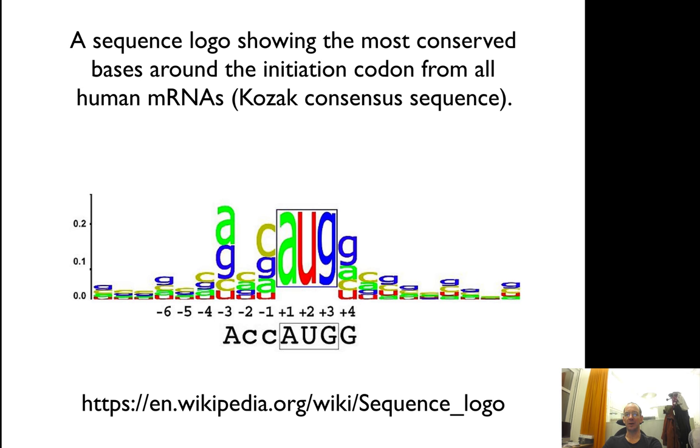Another example is the initiation codon, AUG, in human mRNAs. AUG is exaggerated here because it's perfect. But you see that three steps before, you have some information that should be more likely to be an A or G. We have very little information, and the step before you have a C and next step you have a G. So you have some nucleotide information there.